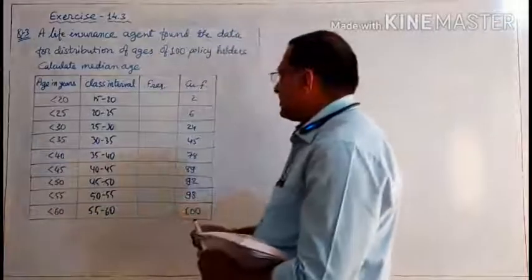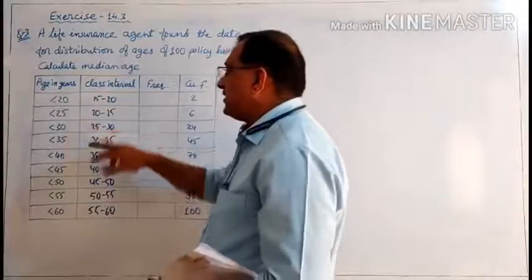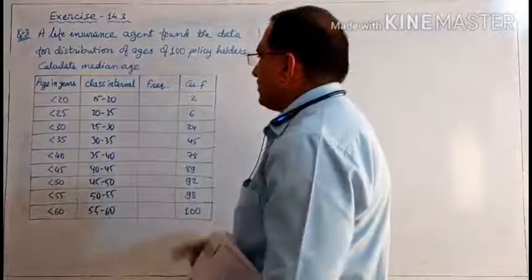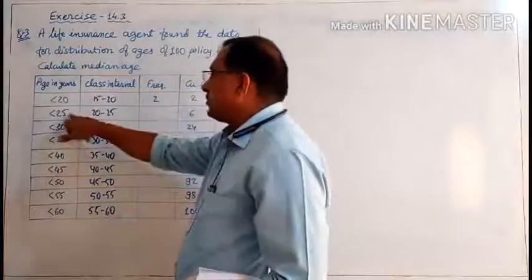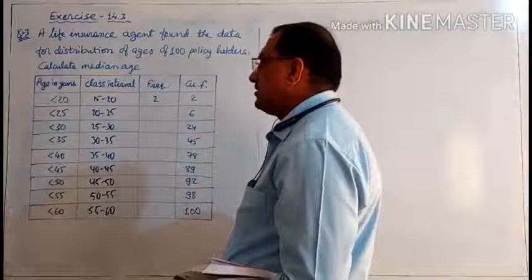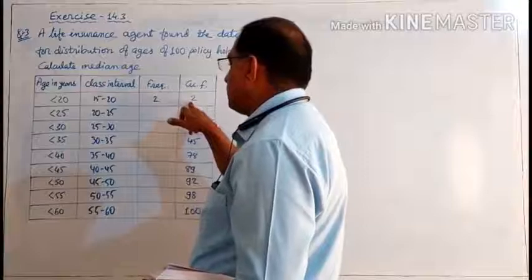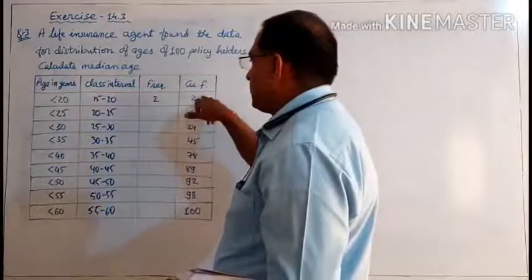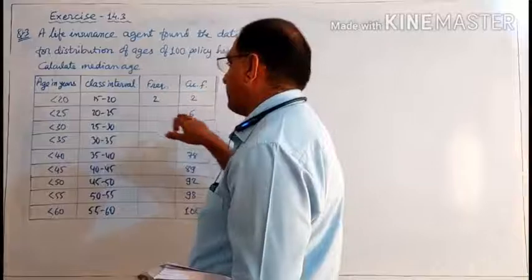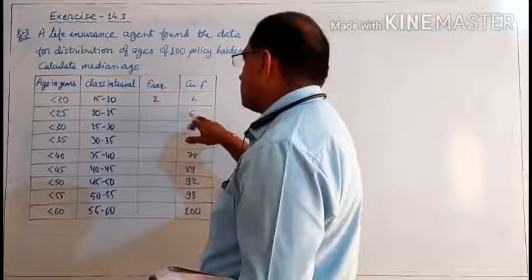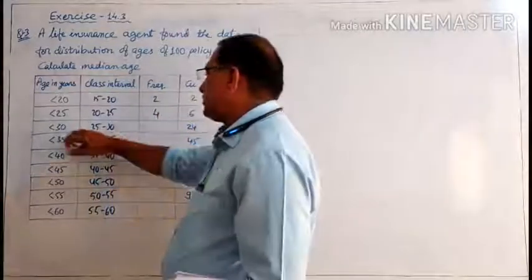Now cumulative frequency is given, so we have to go for frequency. For those having age 15 to 20, from the beginning up to 20 there are 2 policyholders. But below 25 years there are 6 policyholders. That means 6 minus 2 gives the policyholders in the age group 20 to 25, which is 4.